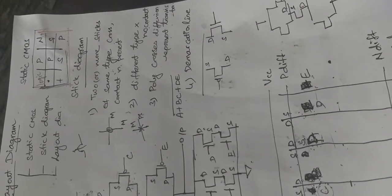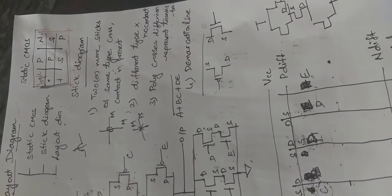Good morning. In the last class we saw how to draw a static CMOS diagram for any given Boolean expression. Now we will see how to draw a stick diagram for a given Boolean expression. The first step will be to draw the static CMOS diagram.